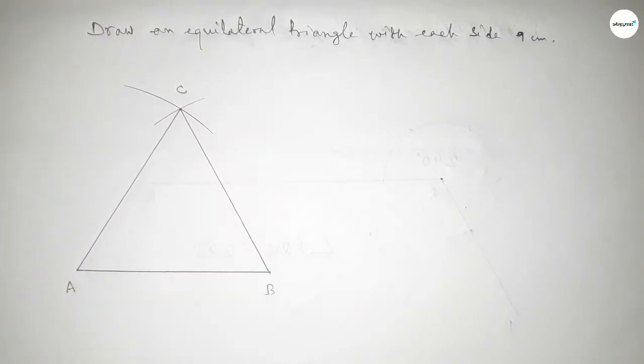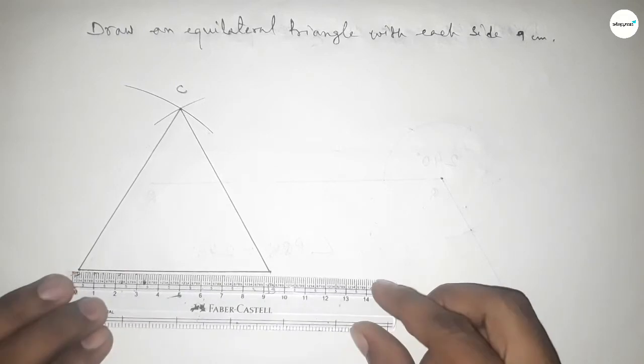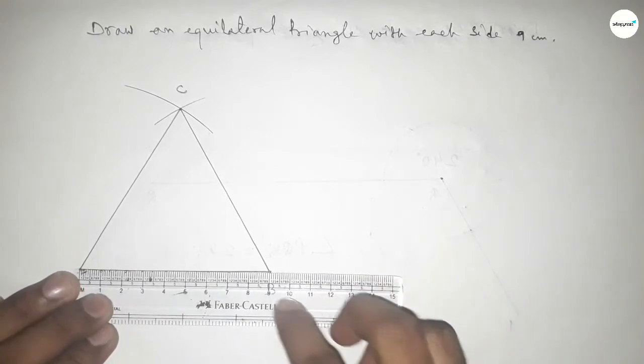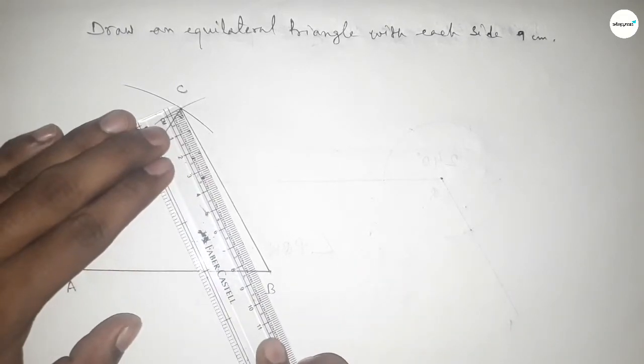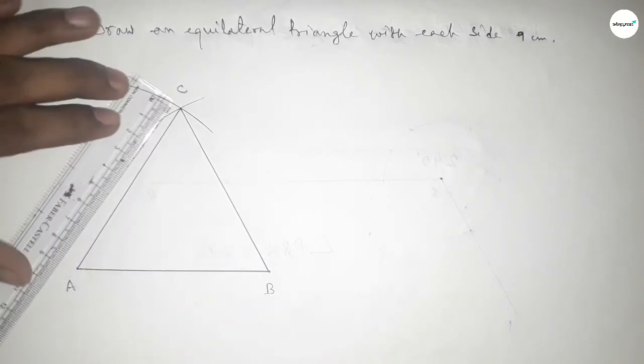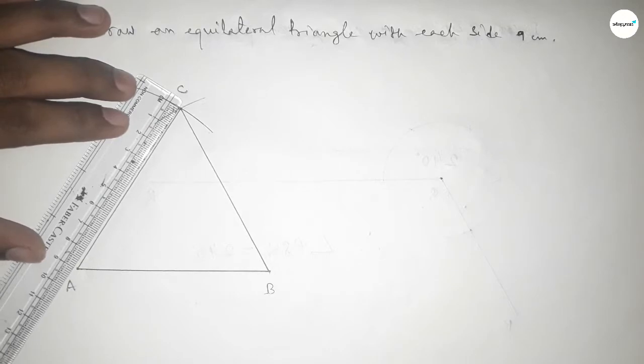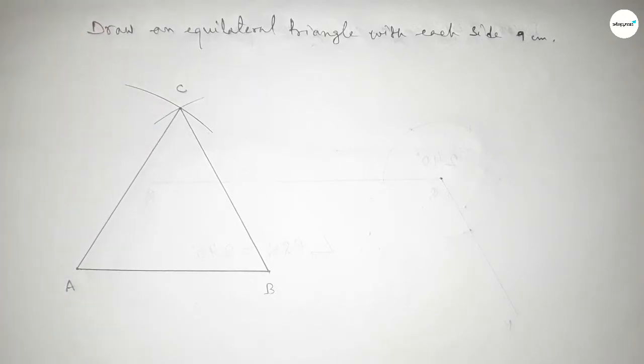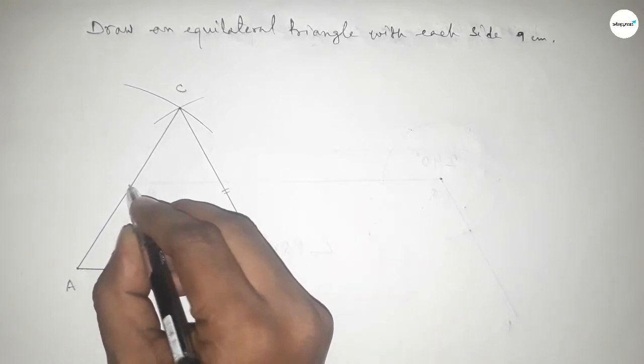Now checking if all the sides are equal or not. This is 9 centimeters, this is 9 centimeters, and this side is also 9 centimeters. So all the sides are equal. Now mark the equal signs on the three sides.